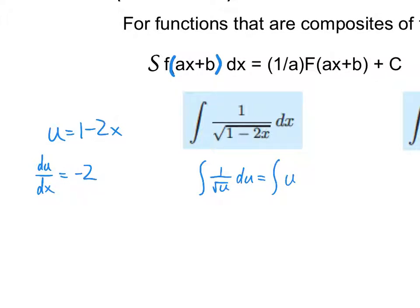I'm going to rewrite this as the integral of 1 over radical u, du. How do we find the integral of 1 over radical u? That's u to the negative one half power. We add 1 to the exponent, giving u to the positive one half, divided by one half — which is the same as times 2. So it's 2u to the one half. Then I need to put my 1 minus 2x back in: 2 radical 1 minus 2x.